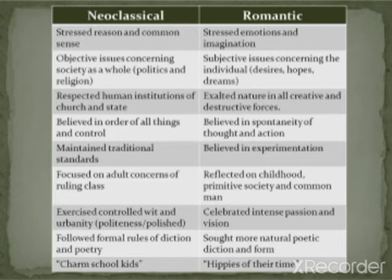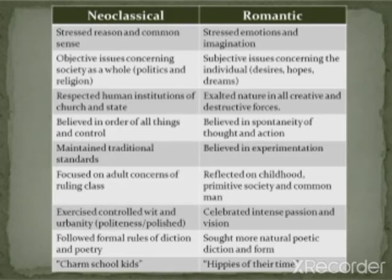Neoclassical artists believed in order, logic, and control, whereas Romantics believed in the spontaneity of thought, emotion, and action. While Neoclassical artists maintained traditional standards, looking to Greek and Roman masters, Romantics believed in experimentation and reflected on childhood, primitive society, and the common man. Neoclassical artists exercised controlled wit, while Romantics celebrated intense passion and vision. Neoclassical artists followed formal rules of diction and poetry; Romantics sought a more natural poetic diction and form.